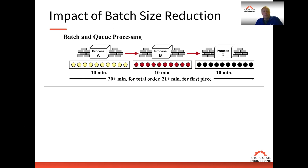Looking at the impact of batch reduction: in batch and queue processing — which applies to any type of product, service, or even meetings where decisions are batched until a meeting occurs — we have three process steps and 10 items. All 10 items need to go through Process A, then Process B, then Process C. We process all items one through ten on Process A, and it takes one minute to process each unit, so 10 minutes total.